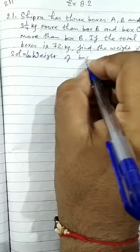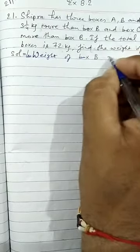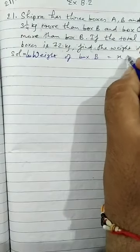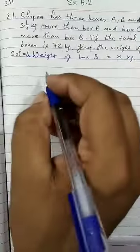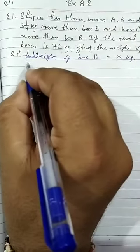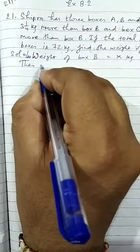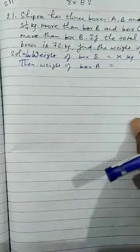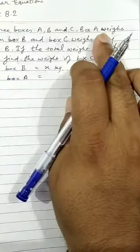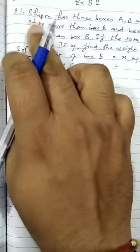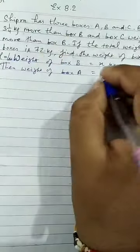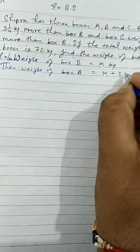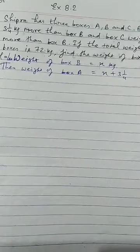Let weight of box B equals to X kg. Then weight of box A equals to, A weighs 3 and 1 upon 4 kg more than B, so it is X plus 3 and 1 upon 4.